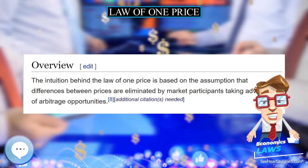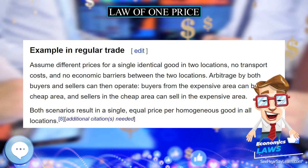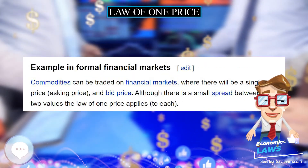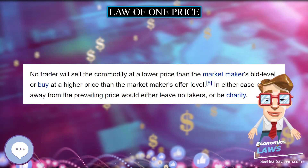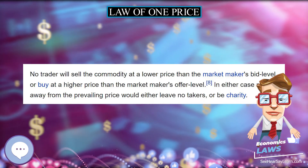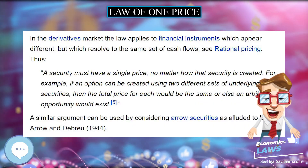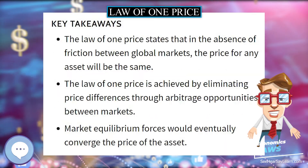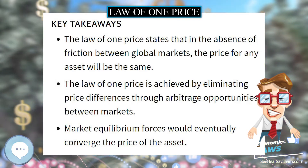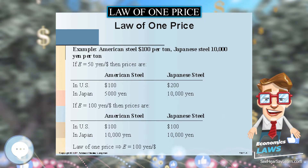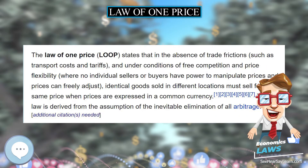As an example in regular trade, assume different prices for a single identical good in two locations, no transport costs, and no economic barriers between the two locations. Arbitrage by both buyers and sellers can then operate: buyers from the expensive area can buy in the cheap area, and sellers in the cheap area can sell in the expensive area. Both scenarios result in a single, equal price per homogeneous good in all locations. For further discussion, see rational pricing.